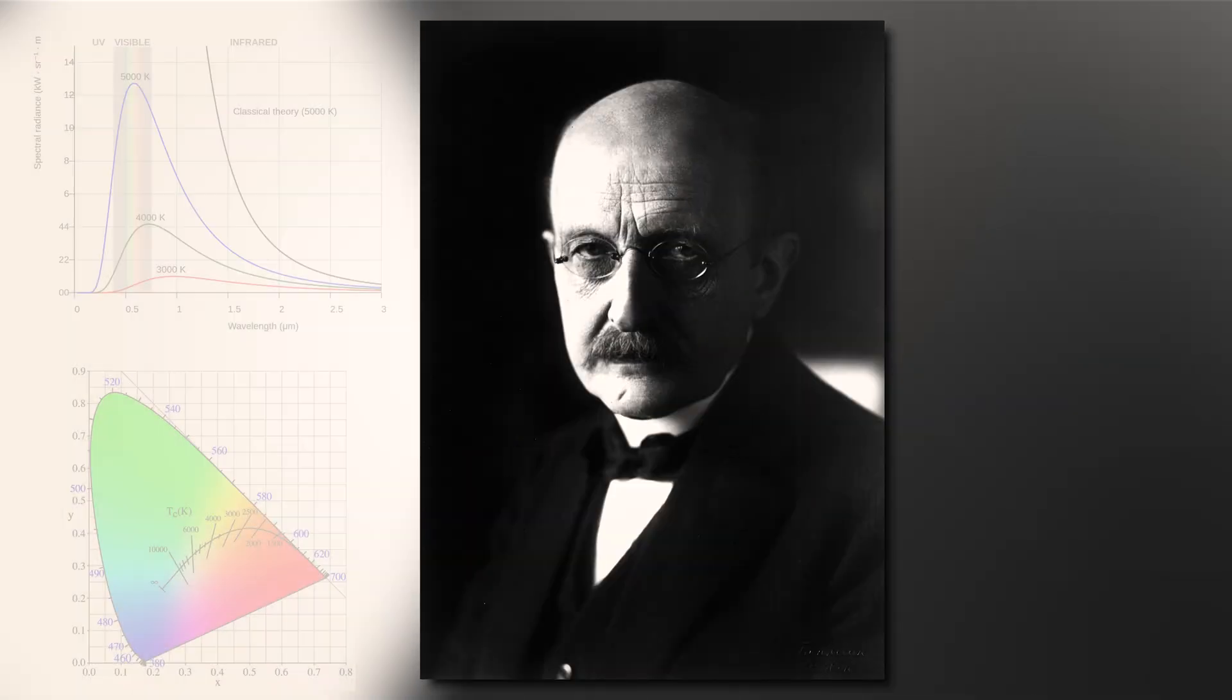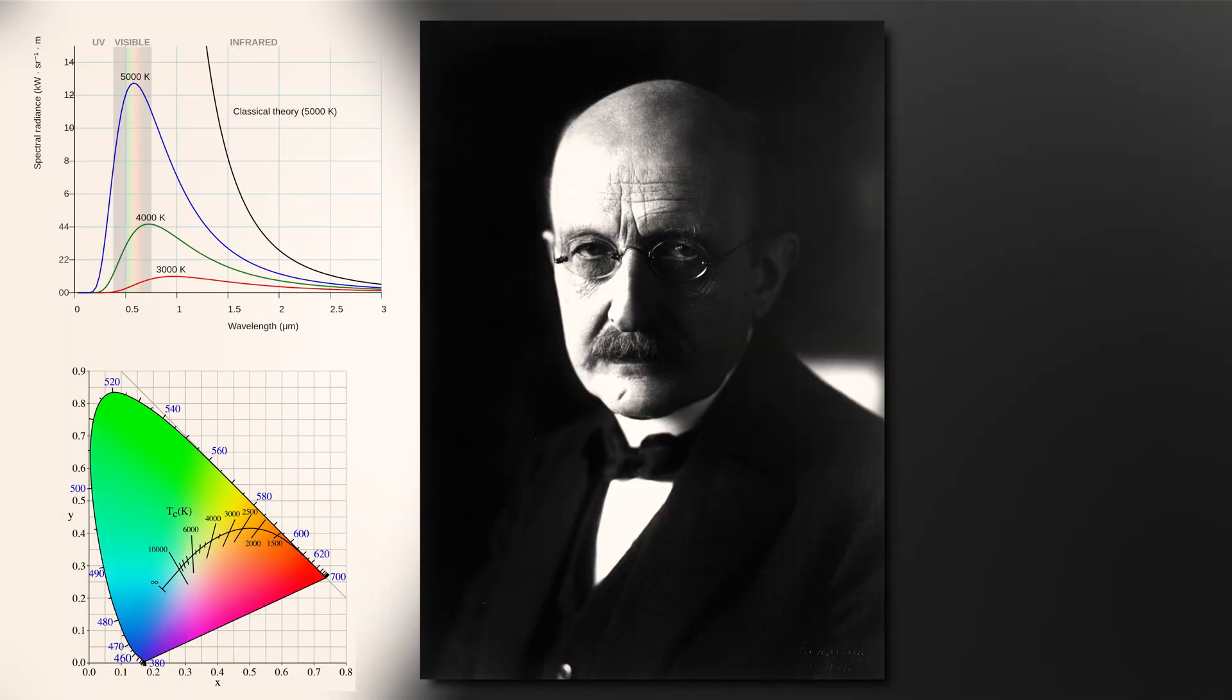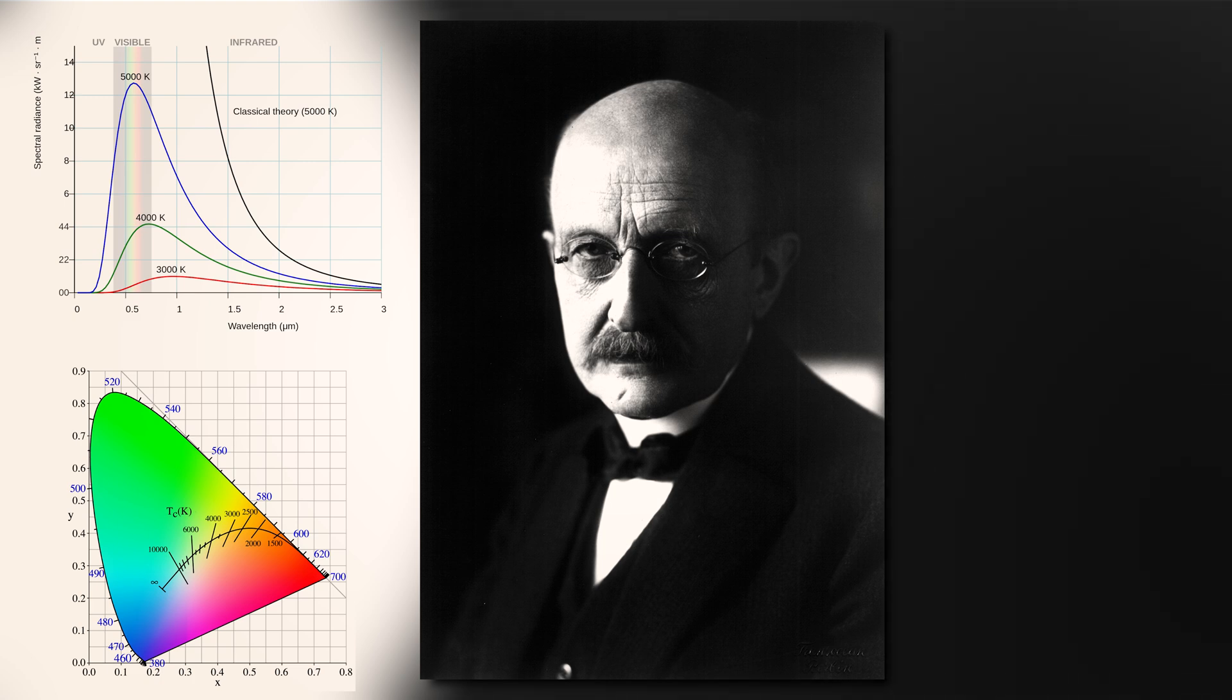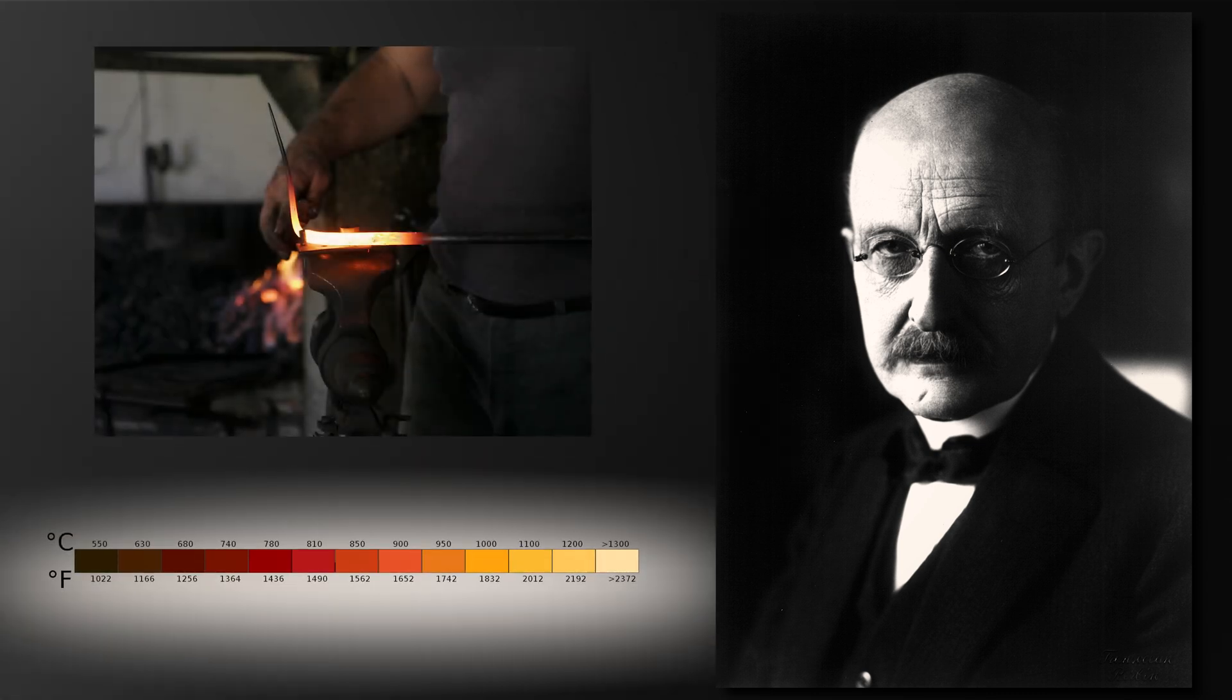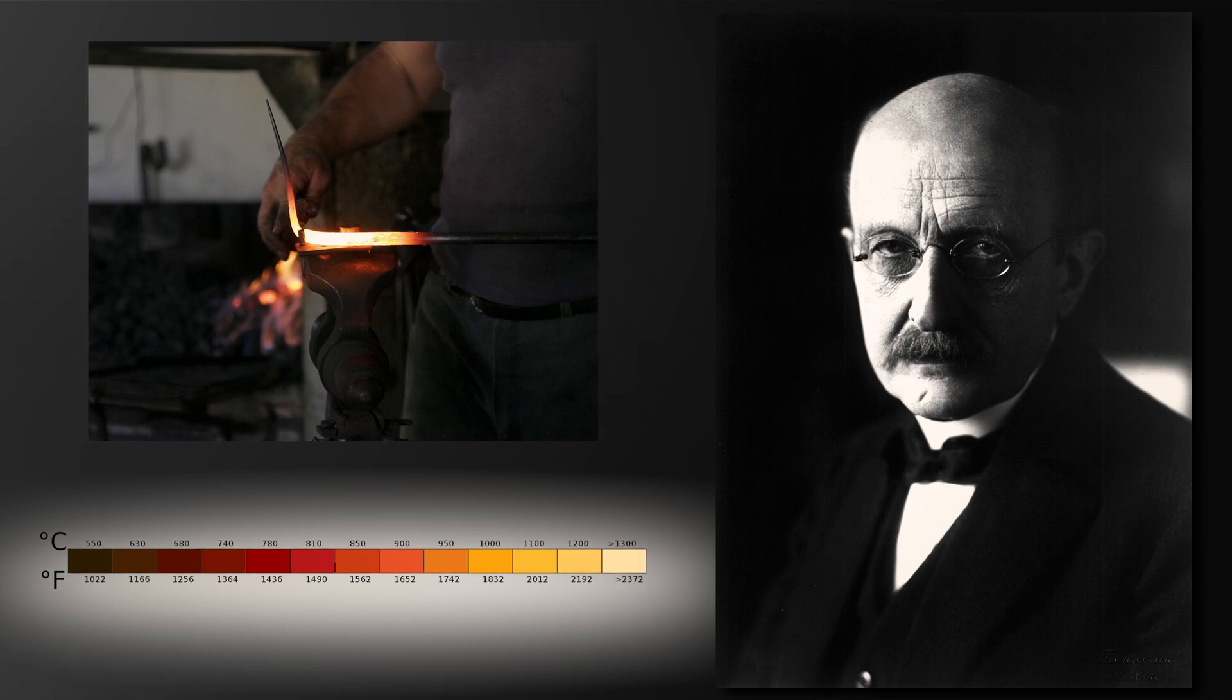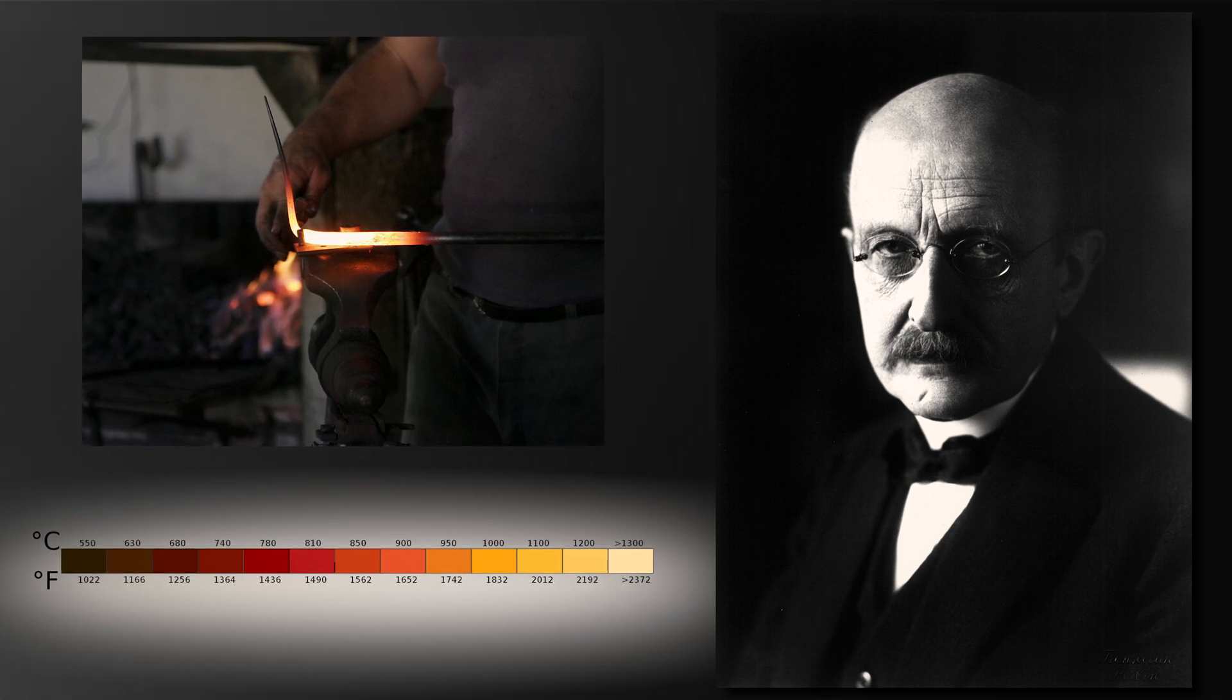He was investigating the emission of radiation from heated objects, a phenomenon known as black body radiation. In his pursuit to comprehend this radiation, Planck made a groundbreaking assumption. He proposed that energy could be absorbed or emitted only in discrete distinct units which he termed bundles or energy elements. This idea allowed Planck to explain why certain objects change color when heated.